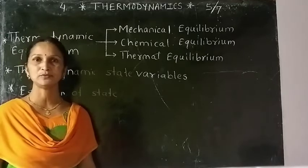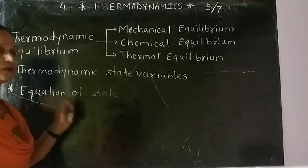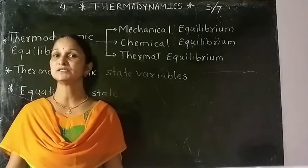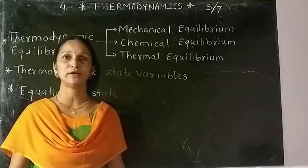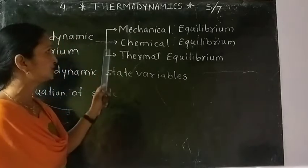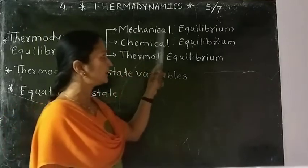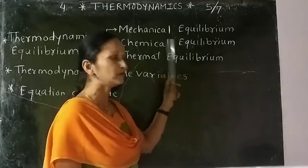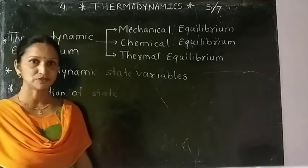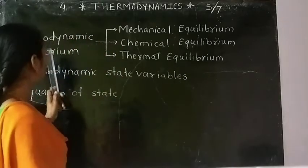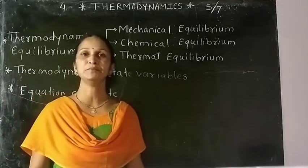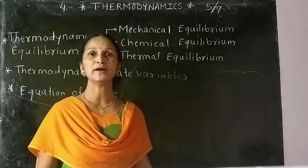We will start with thermodynamic equilibrium. A system is said to be in thermodynamic equilibrium if it follows all three equilibria: mechanical equilibrium, chemical equilibrium, and thermal equilibrium. We will see them one by one.